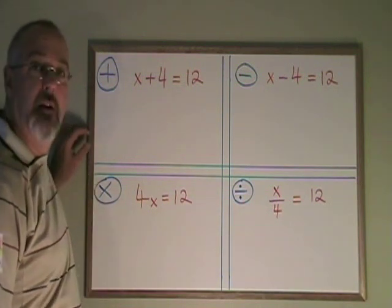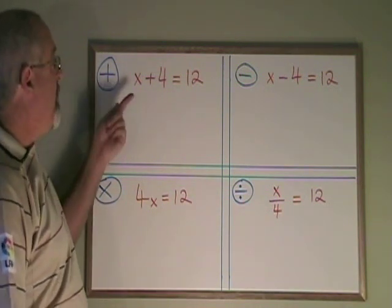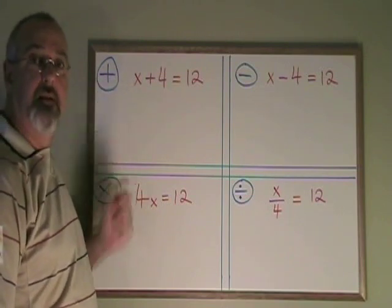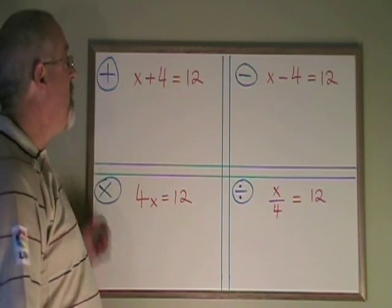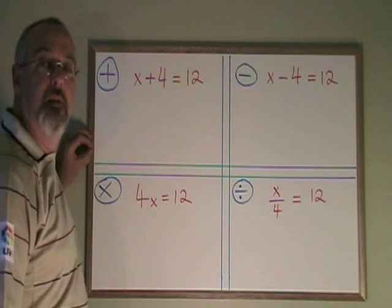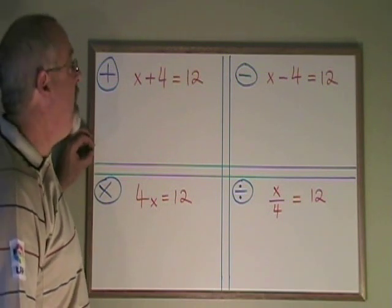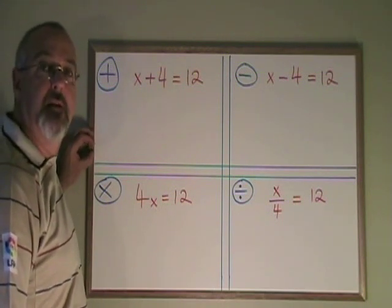The goal of algebra is to get the variable, in this case the x, isolated. I want my x alone on one side of the equals. I need to move any numbers that are with the x to the other side.